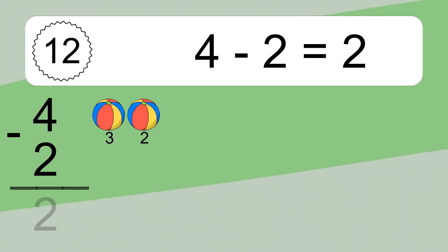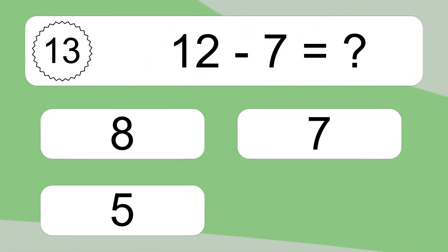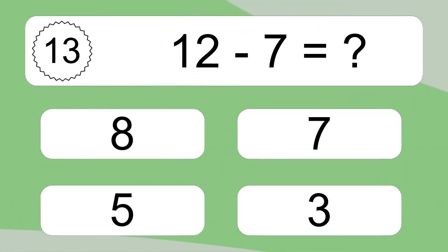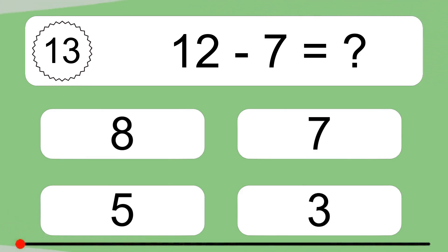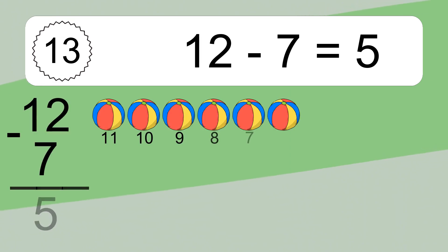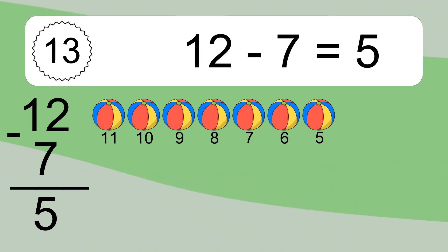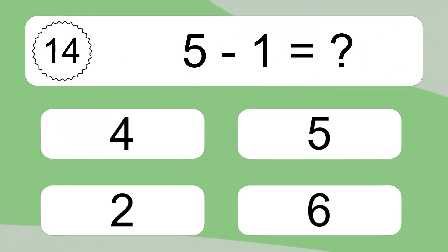4 minus 2 equals what? 4 minus 2 equals 2. Let's count it: 3, 2. 12 minus 7 equals what? 12 minus 7 equals 5. Let's count it: 11, 10, 9, 8, 7, 6, 5.